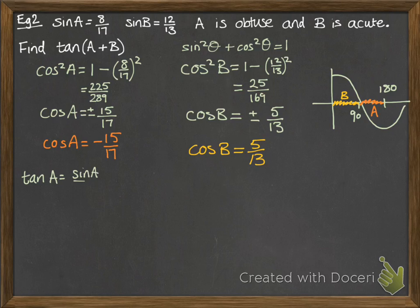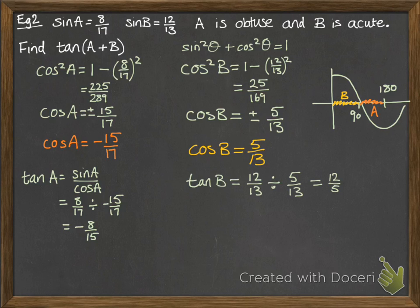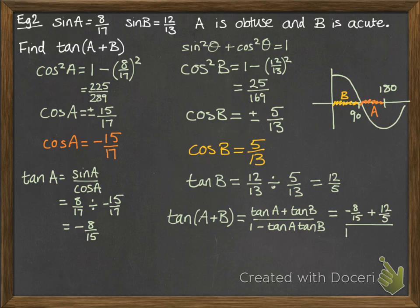Now we can work out tan of A by doing sine over cos. And we can work out tan of B by doing sine over cos. And work that through. Now we can put it into our formula for tan A plus B. That'll be tan A plus tan B over 1 minus tan A tan B. Put those numbers in that we just worked out. And we get our final answer of 140 over 171.